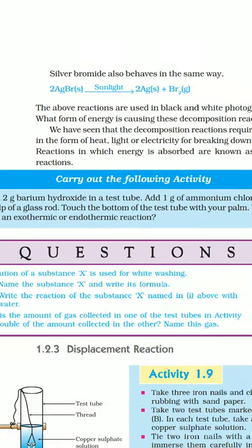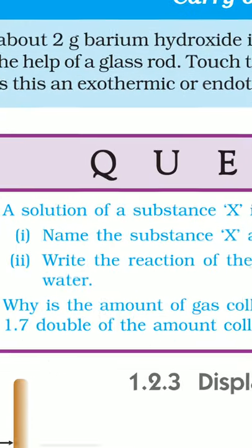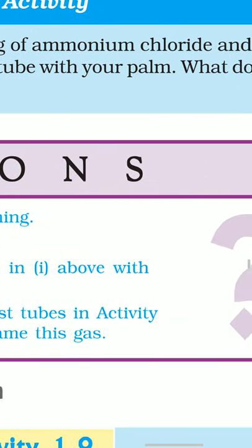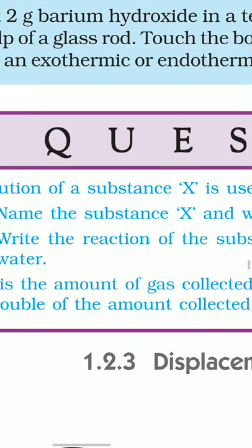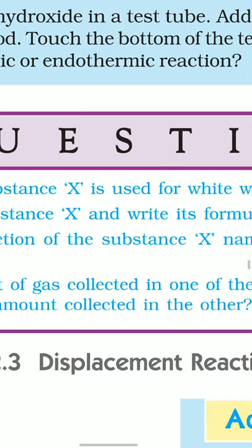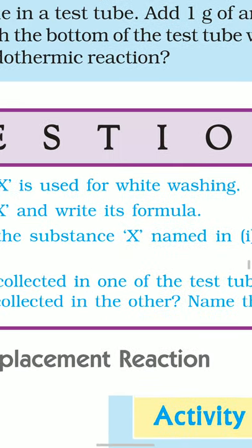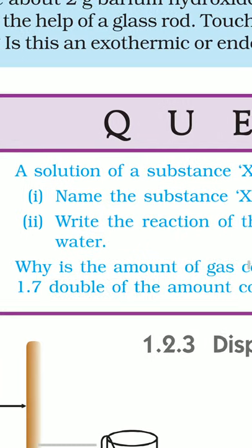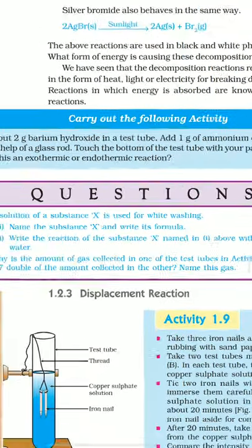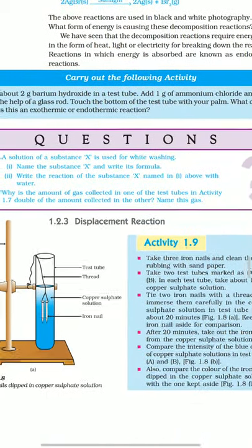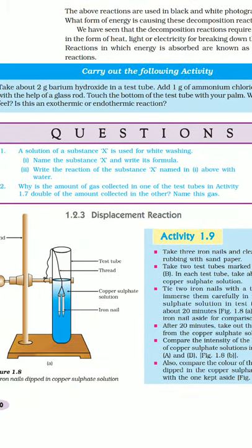Why is the amount of gas collected in one of the test tubes in activity 1.7 double of the amount collected in the other? Name the gas. It is so because in water, the hydrogen is two times more than oxygen by mass and volume. 2H2O aqueous undergoes electrolysis to give 2H2 gas form plus O2 gas form.